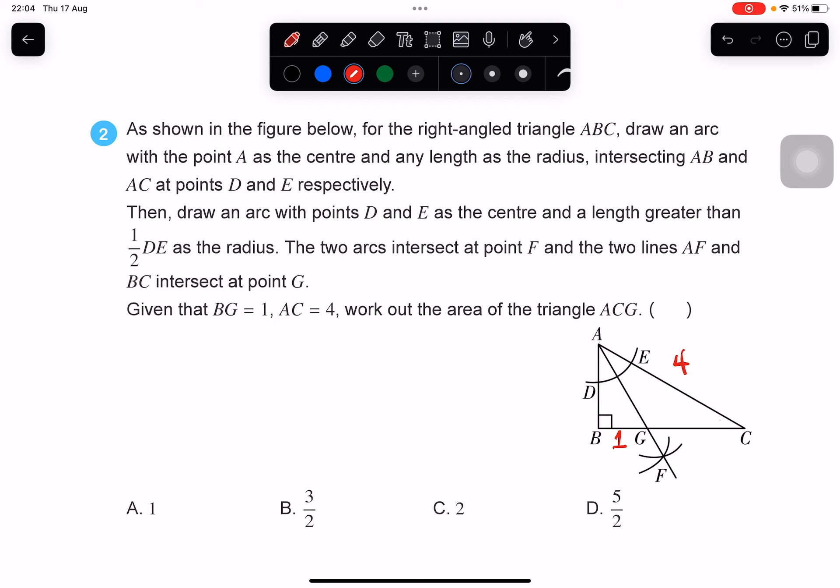So if BG is 1, that is the perpendicular distance, it means that the perpendicular distance from G to AC is also 1.